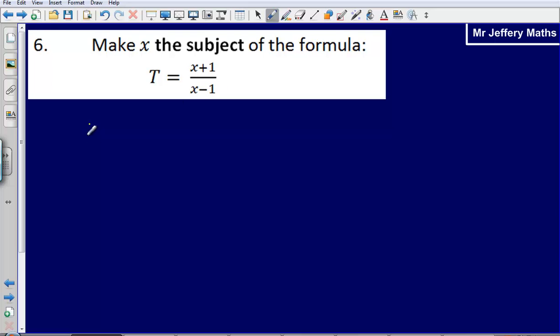So the first thing I'm going to do here is I'm going to say that that means that I've got T bracket x minus 1 is equal to x plus 1. Simply multiplying both sides by x minus 1 to get rid of that divide by x minus 1.